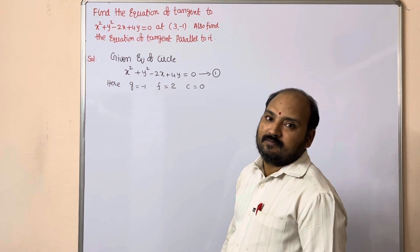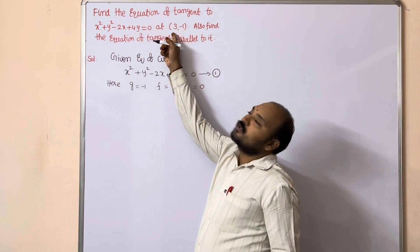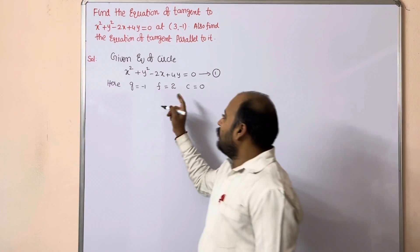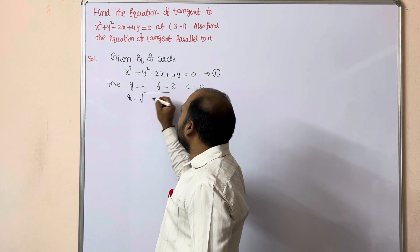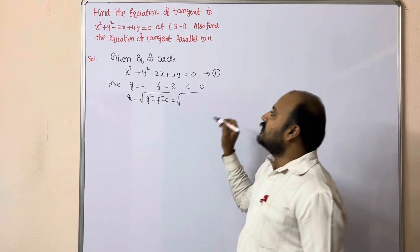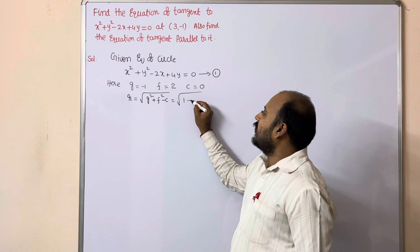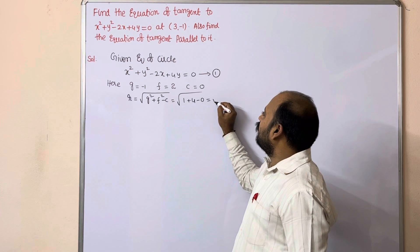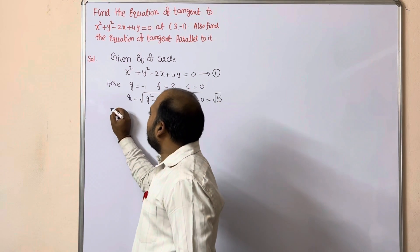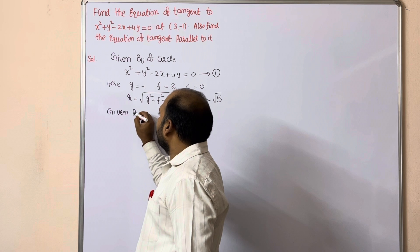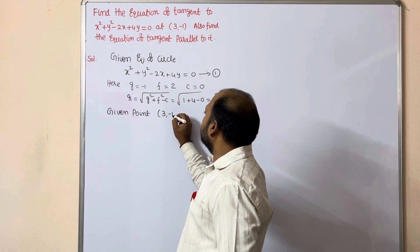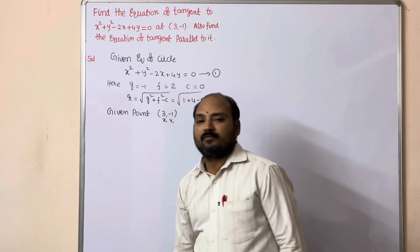They are asking to calculate the tangent equation for the given circle at the point (3, -1). Before that, let us also calculate the radius: r = √(g² + f² - c) = √((-1)² + 2² - 0) = √5. So the radius is √5. The given point (3, -1) is x₁, y₁.